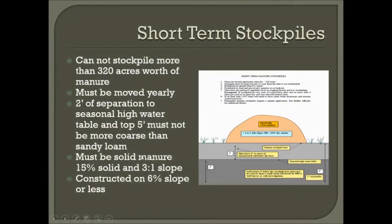There are also other requirements for short-term stockpile sites, including limits on the amount of manure that can be stockpiled on one field — 320 acres worth of manure based on the nitrogen rate. That stockpile must be removed yearly, must have 2 feet of separation to the seasonal high water table, and the top 5 feet must not be coarser than sandy loam. Manure must be solid — 15% solids or stackable on a 3-to-1 slope — and the site must be constructed on a slope of 6% or less. In most cases your site manager will dictate stockpile locations, but it's important to know the basic requirements.